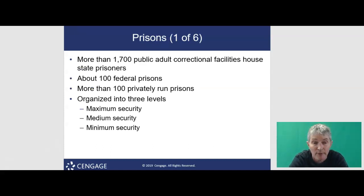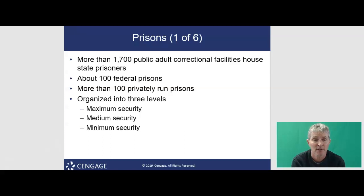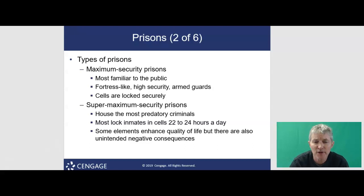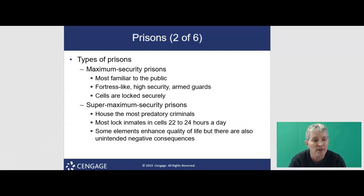More than 1,700 public adult correctional facilities house state prisoners in the United States. About 100 of them are federal prisons, and more than 100 are privately run. They're organized into three levels: maximum security, medium security, and minimum security. Maximum security prisons house dangerous felons and maintain strict security measures — high walls, limited contact with the outside world. These are the ones you see on TV. When you think of Alcatraz, that's this type of prison — designed for security and to eliminate hidden corners and passageways.